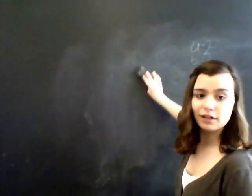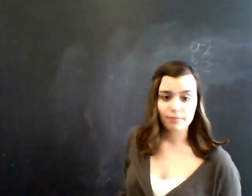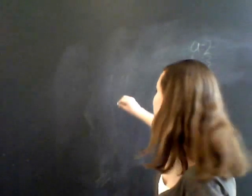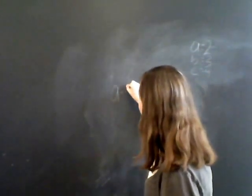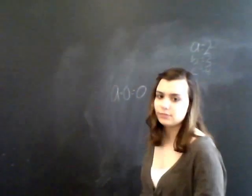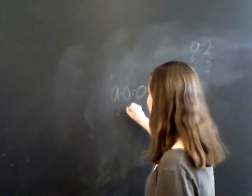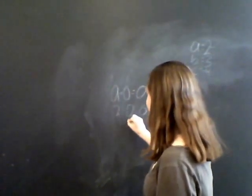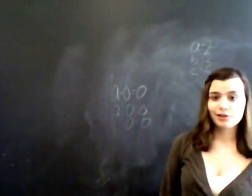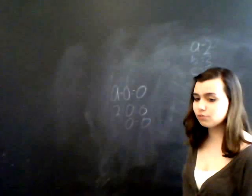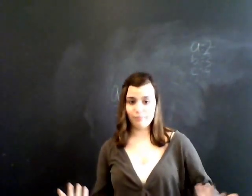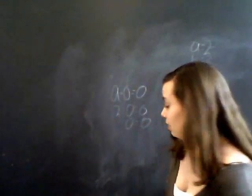And now on to the final property — the zero property. The zero property states that a times 0 equals 0. It's another one that makes sense: 2 times 0 equals 0. Anything times 0 equals 0. If you have two groups of 0, it's going to equal 0. It doesn't matter how many groups of 0 you have — there are no groups. That's how that works.